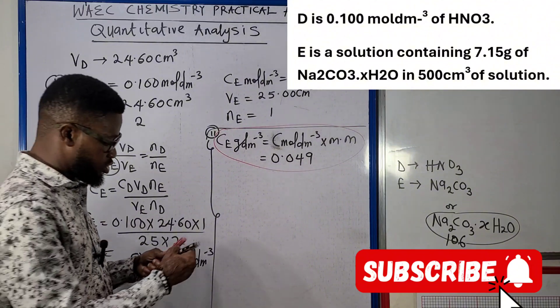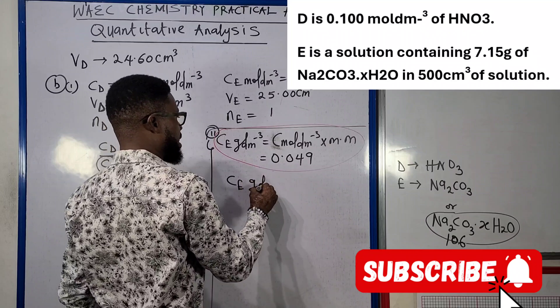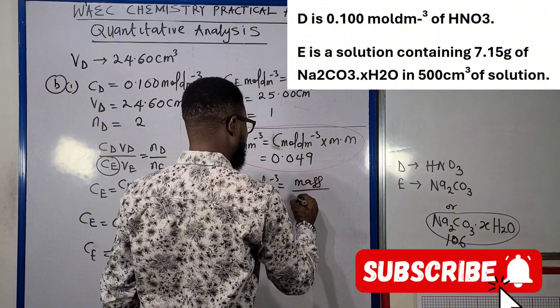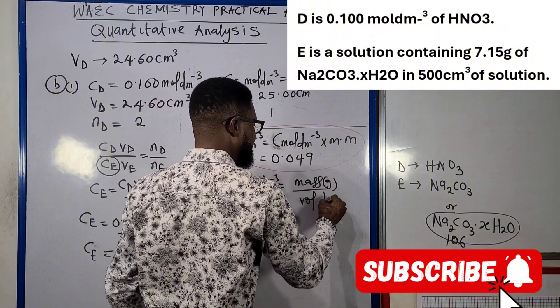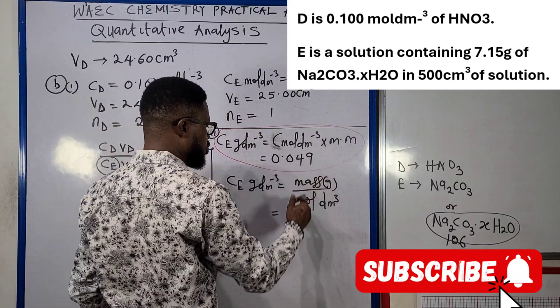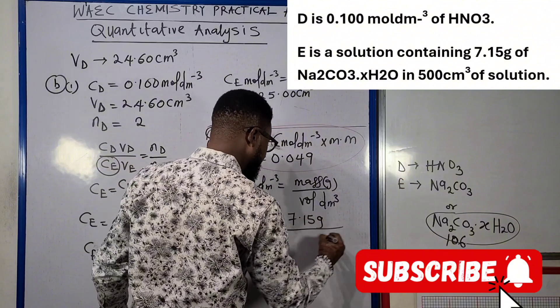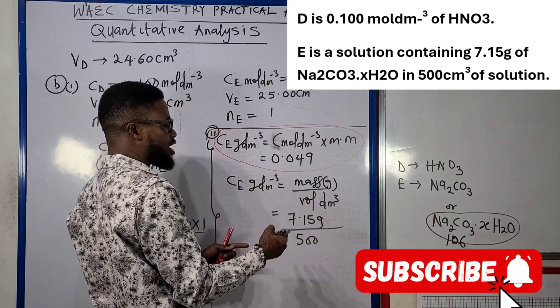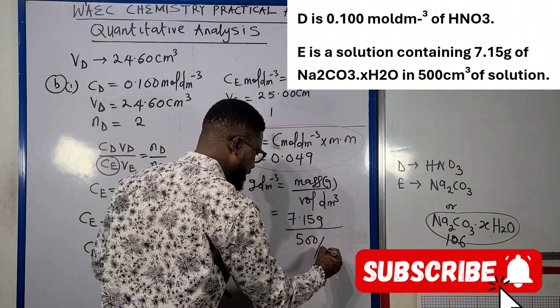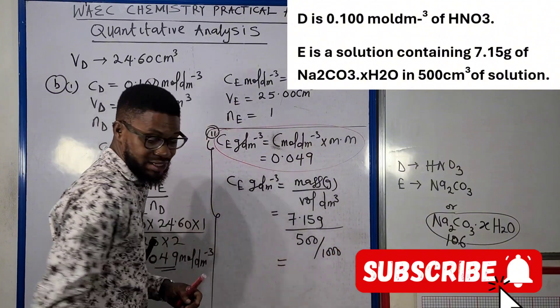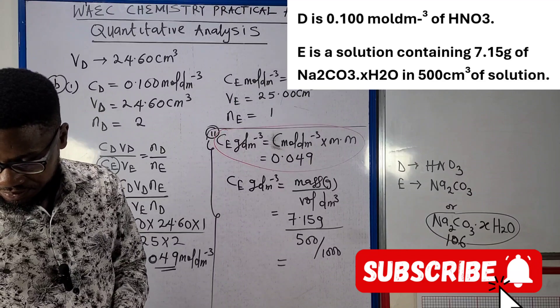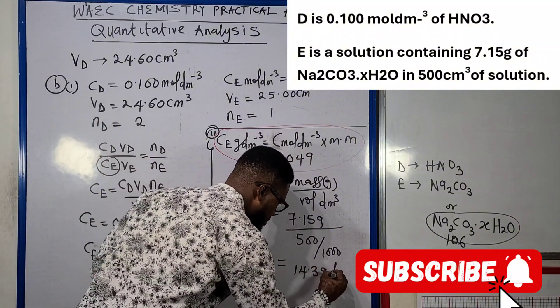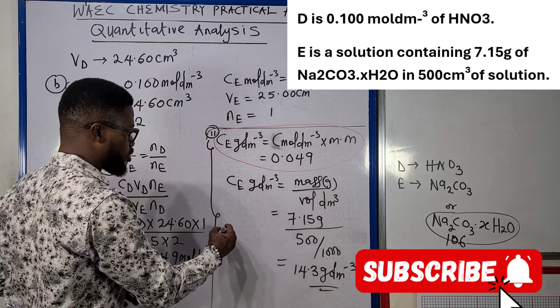In getting the answer alternatively, you need to understand that concentration of E in gram per dm³ is actually mass in grams divided by the volume in dm³. According to what you have from the question, we were given 7.15 gram in 500 cm³. Now since we were given 500 cm³, that's not in dm³. How do we convert from cm³ to dm³? We divide by 1000.